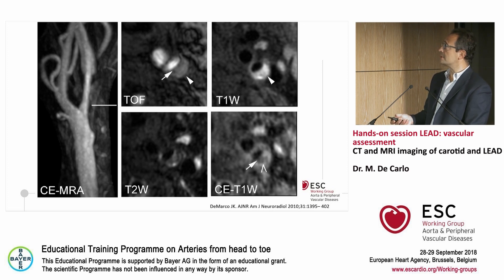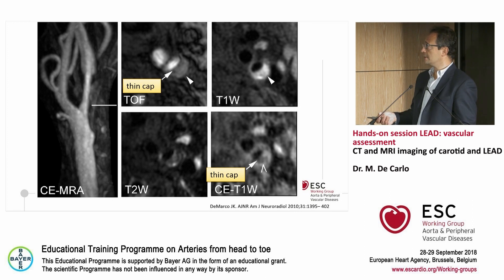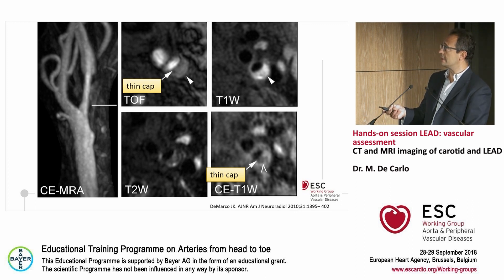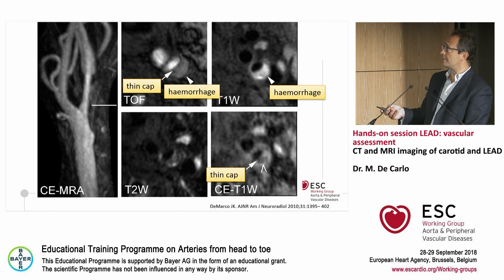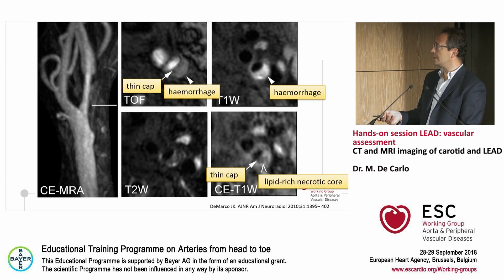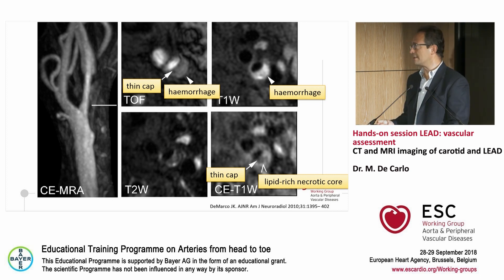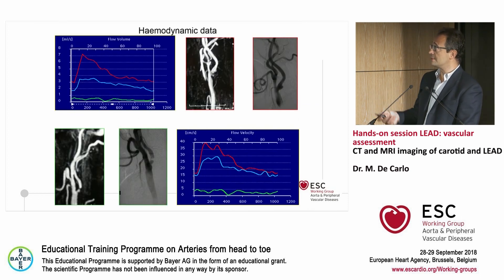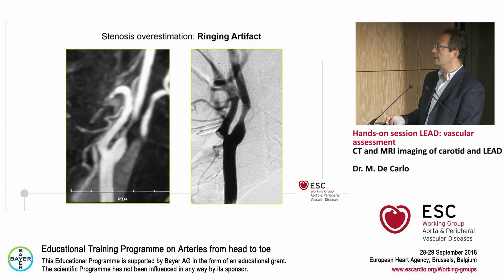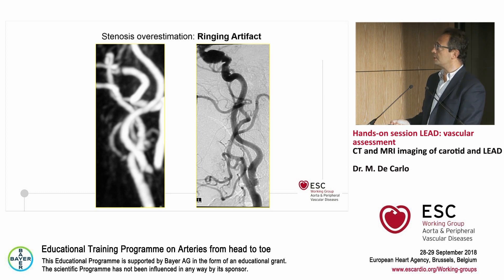Regarding fine morphology assessment, you can use different protocols of acquisition: time of flight, T1-weighted, and so on. You can identify the presence of thin-cap atheroma, but it is not easy and requires a lot of experience. You can find intraplaque hemorrhage in the T1-weighted protocol acquisition, and identify lipid-rich necrotic core from the contrast-enhanced T1-weighted sequence. However, it is not something you can routinely use. You can also obtain hemodynamic data from MRA for research purposes. One limitation is that MRA sometimes overestimates — the so-called ringing artifact.